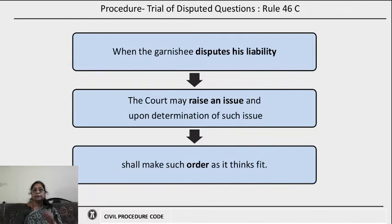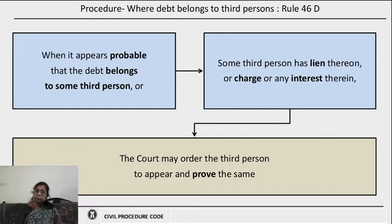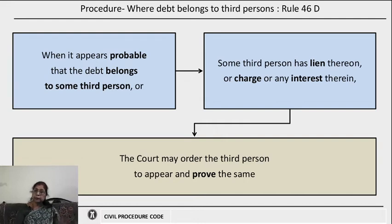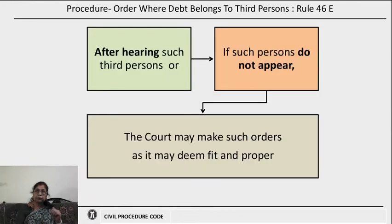Rule 46C further says that in some cases the debt may belong to some third persons also — it may not be a debt completely due to the judgment debtor alone. When it appears probable to the court that the debt belongs to some third person, or that some third person has a lien, charge, or interest over that amount or property, then the court may order that third person to appear before the court and prove it, so that it can be decided whether the liability is genuine. If third persons appear, the court will hear them; if they do not appear, Rule 46E says the court may make such orders as it deems fit and proper.